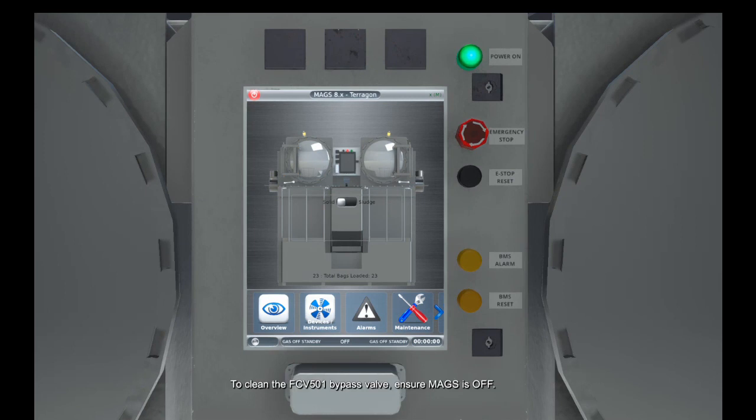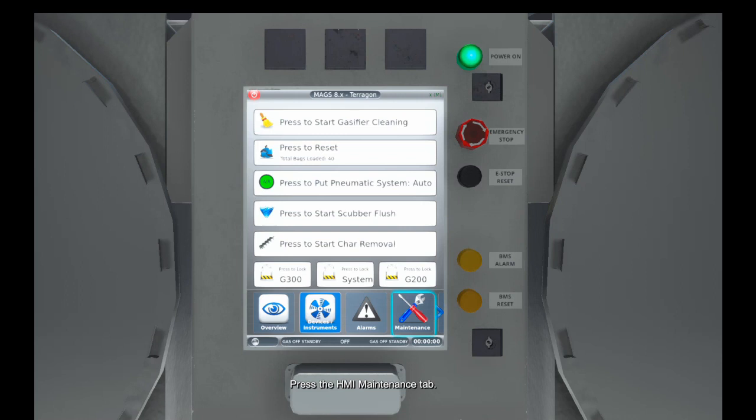To clean the FCV501 bypass valve, ensure MAGS is off. Press the HMI Maintenance tab. If the pneumatic system is on, select Press to put Pneumatic System Auto to turn the pneumatic system off.